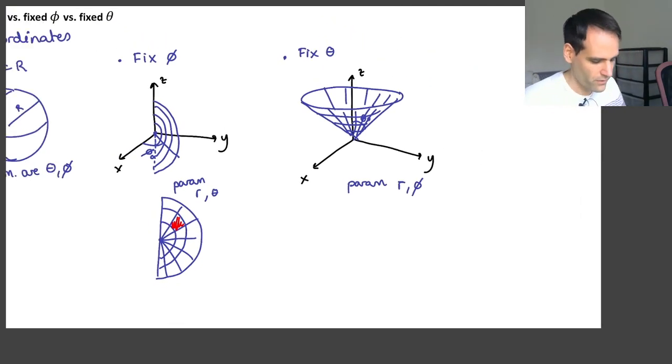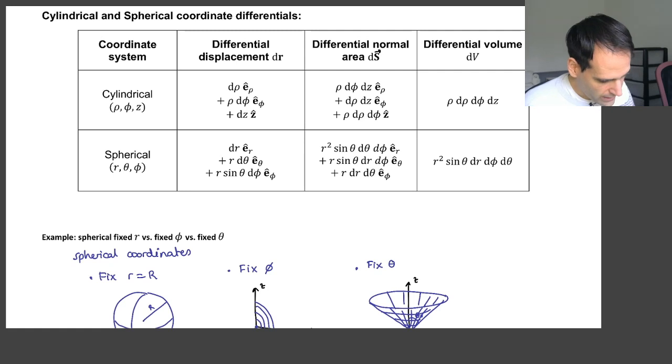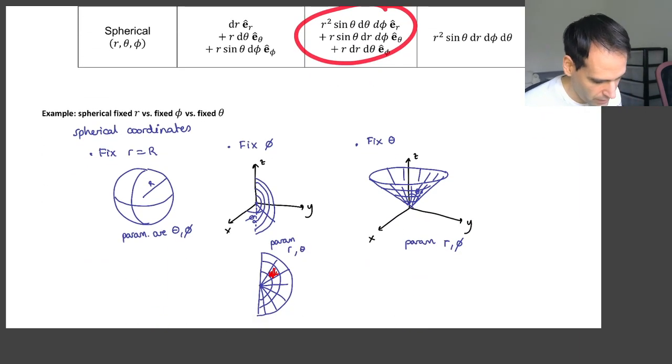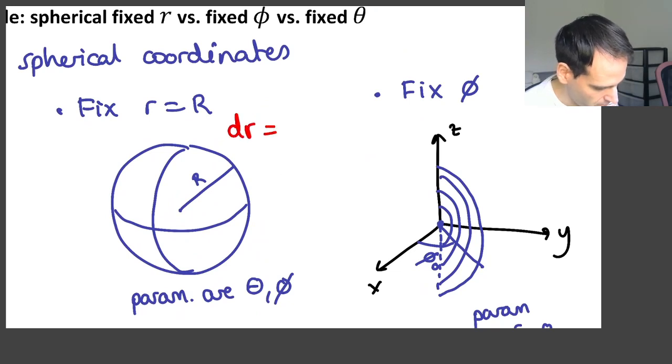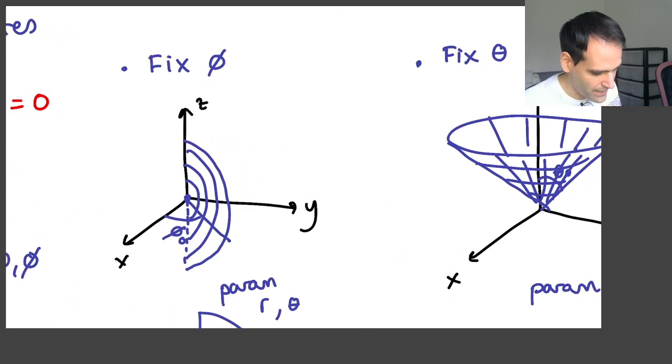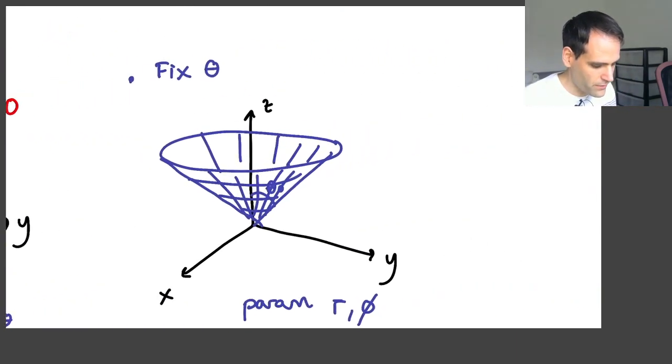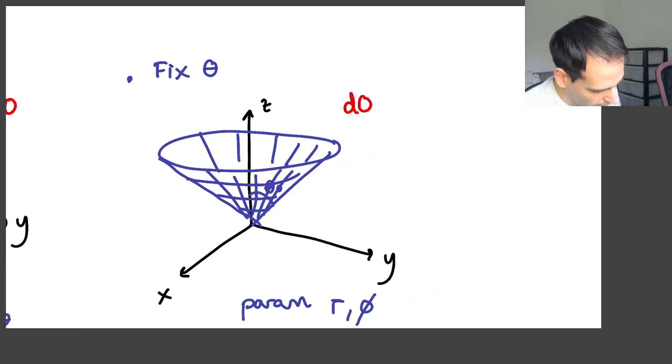So then this means that by looking at this, this includes the three cases. And how can we distinguish the three cases? It's very easy. Here we are fixing r. So in other words, we could say that dr is 0. We are not changing r. Here we are fixing φ, so we could say that dφ is 0. And here we are fixing θ, so we could say that dθ is 0.